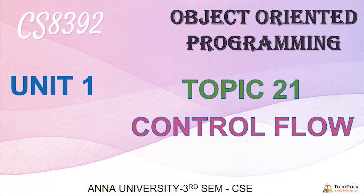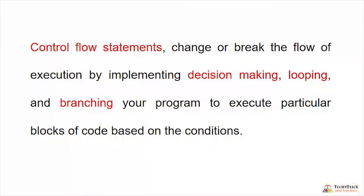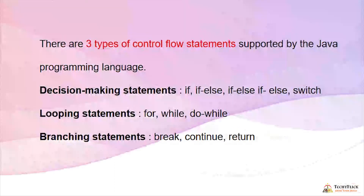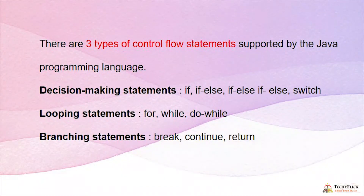CS 8392 Unit 1: Control Flow. Control flow statements change or break the flow of execution by implementing decision-making, looping, and branching your program to execute particular blocks of code based on conditions. There are three types of control flow statements supported by Java: decision-making statements, looping statements, and branching statements.